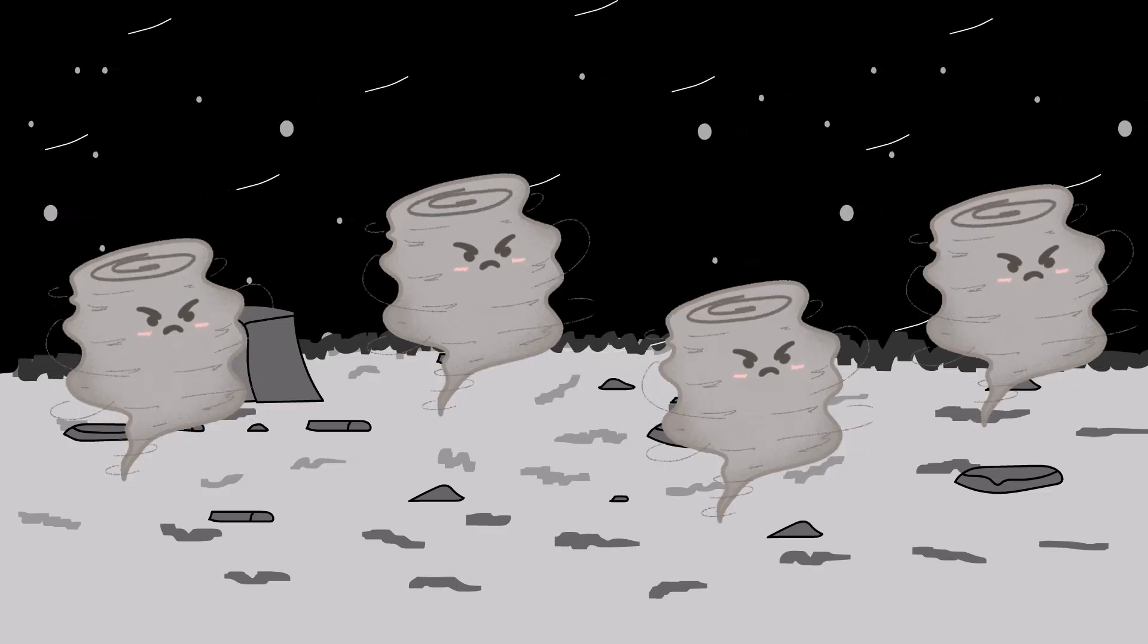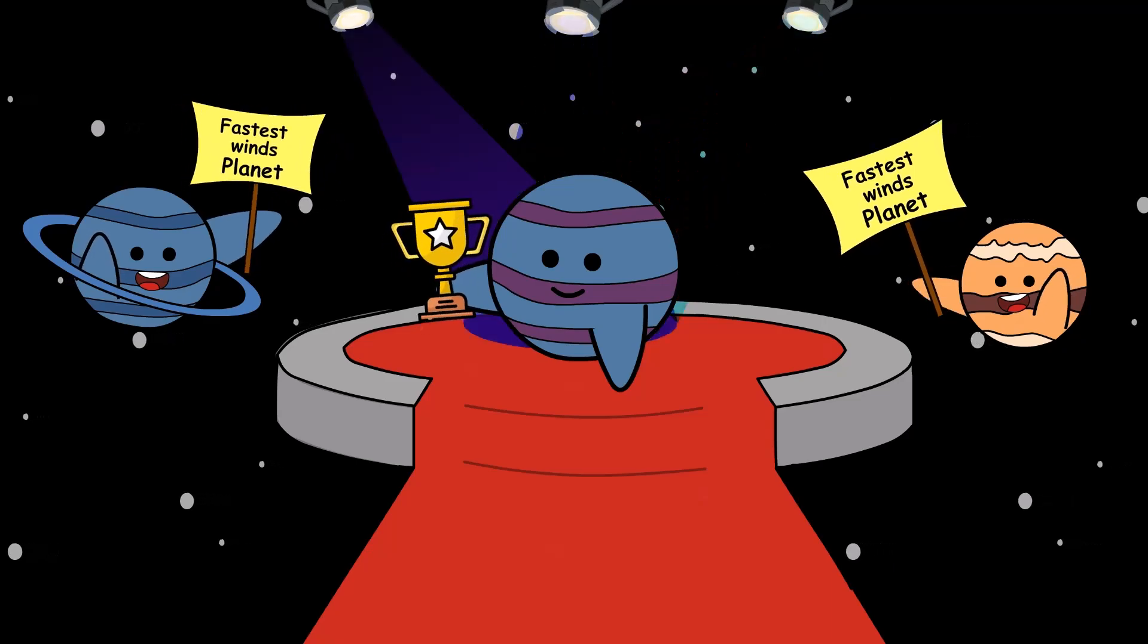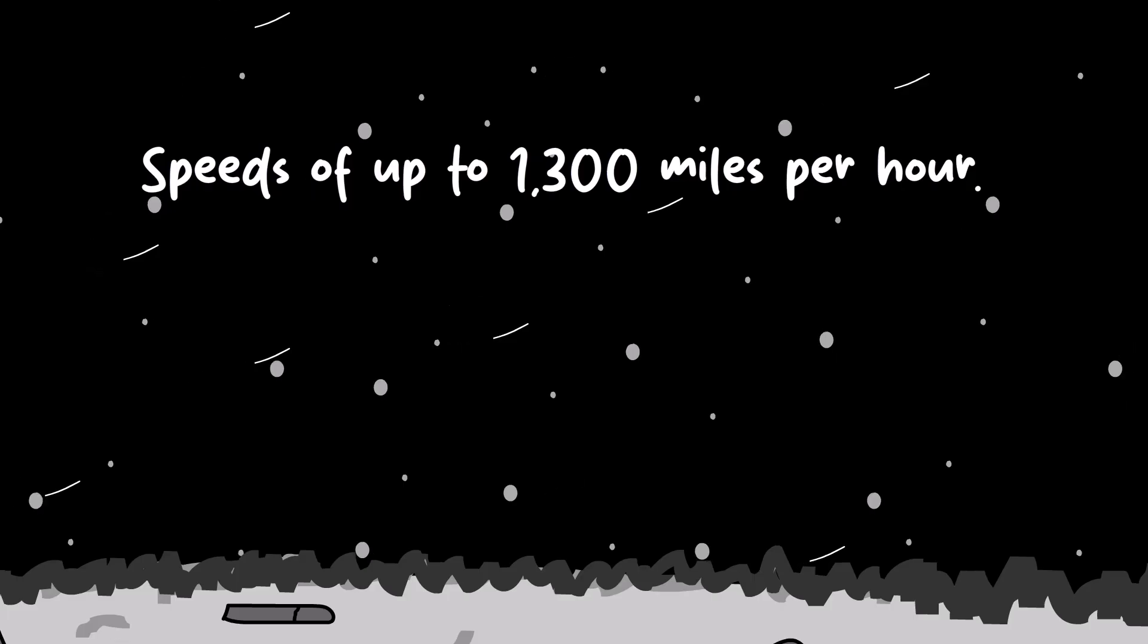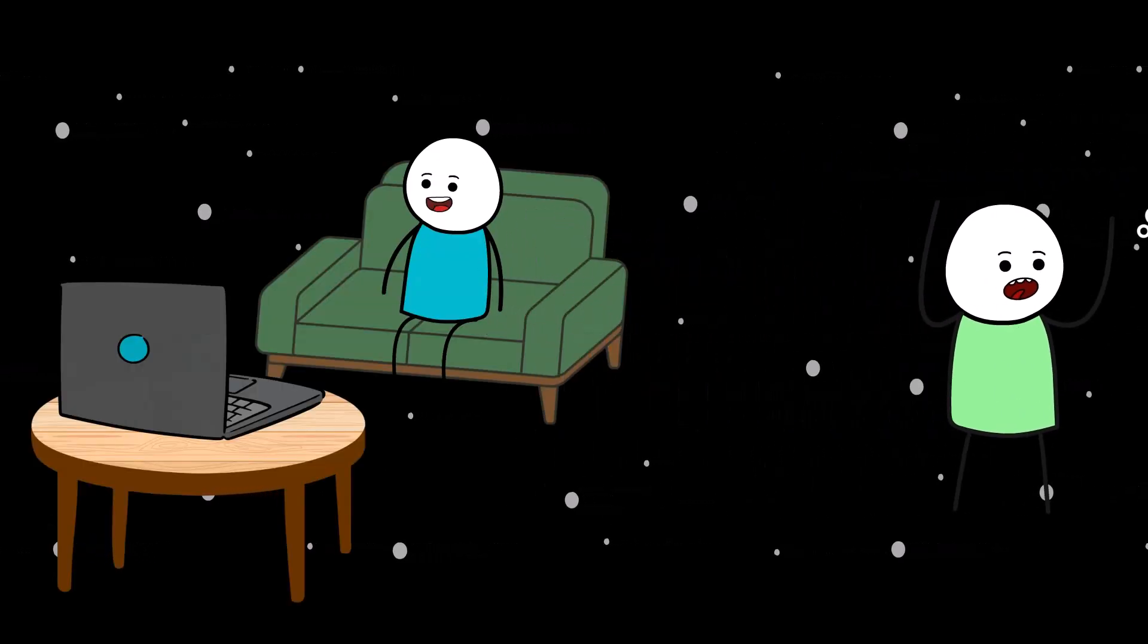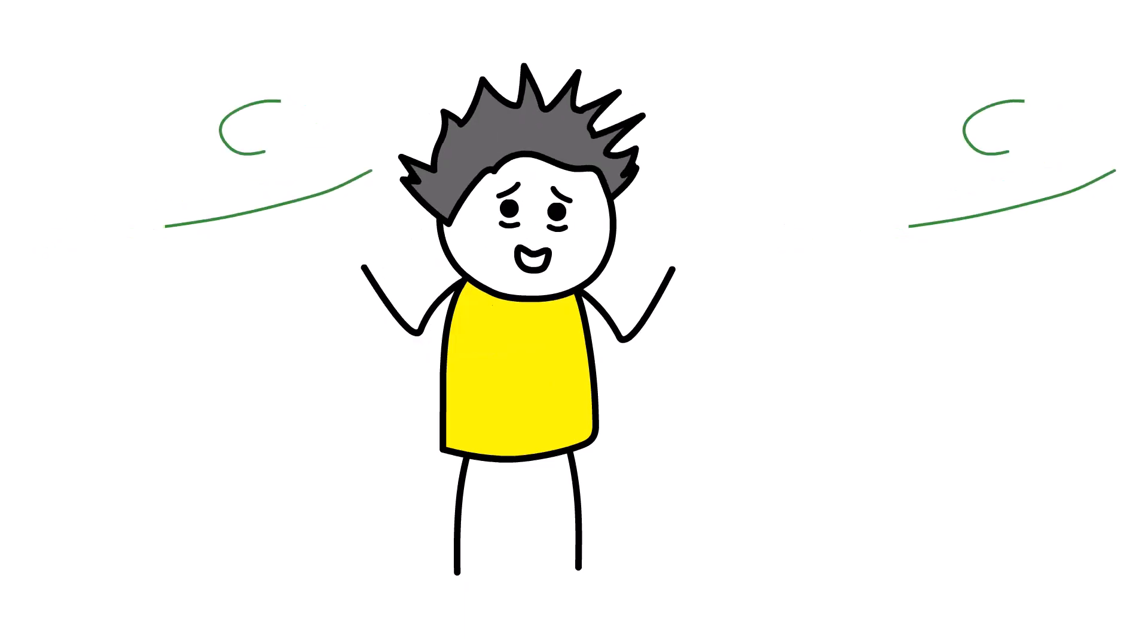Neptune's weather is a full-blown cosmic nightmare. This planet holds the title for the fastest winds in the entire solar system. These winds can reach speeds of up to 1,300 miles per hour. That's faster than a fighter jet, faster than a speeding bullet. It's the kind of wind that would rip your entire face off.